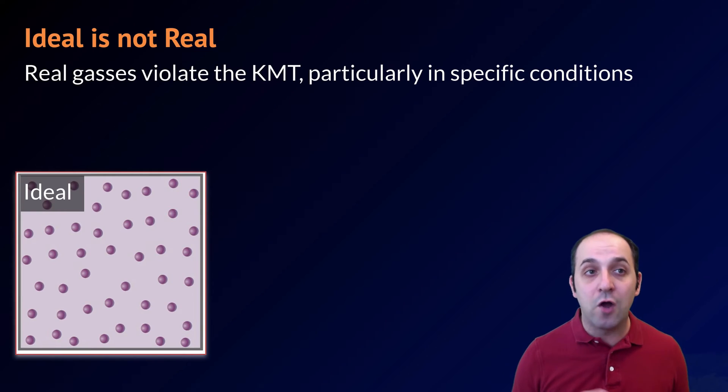Now, of course, we need to understand that this does not describe real gases. Real gases actually violate the kinetic molecular theory in all five of those postulates, but that really only happens in any measurable way in specific conditions, particularly when the particles of the gas are moving very slowly and when they're very, very close to each other.